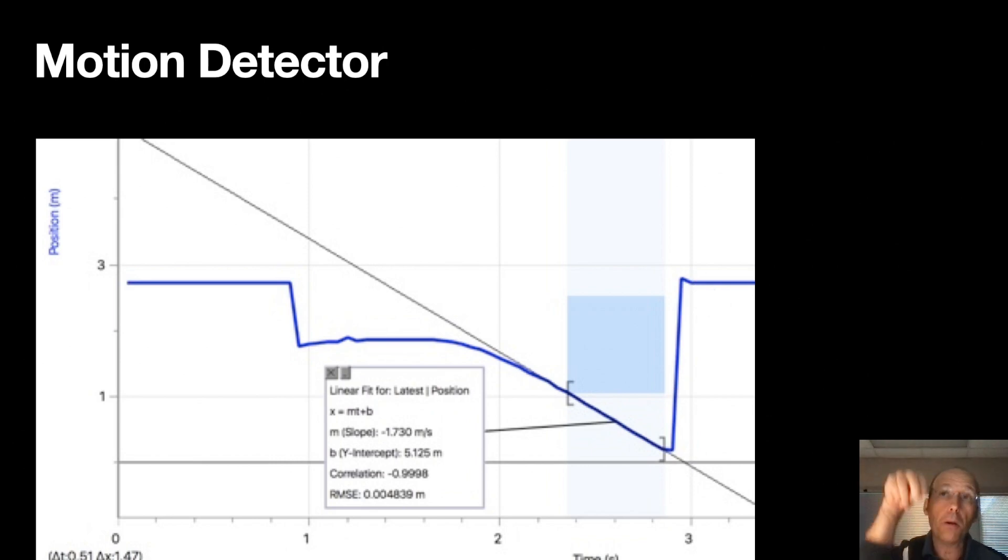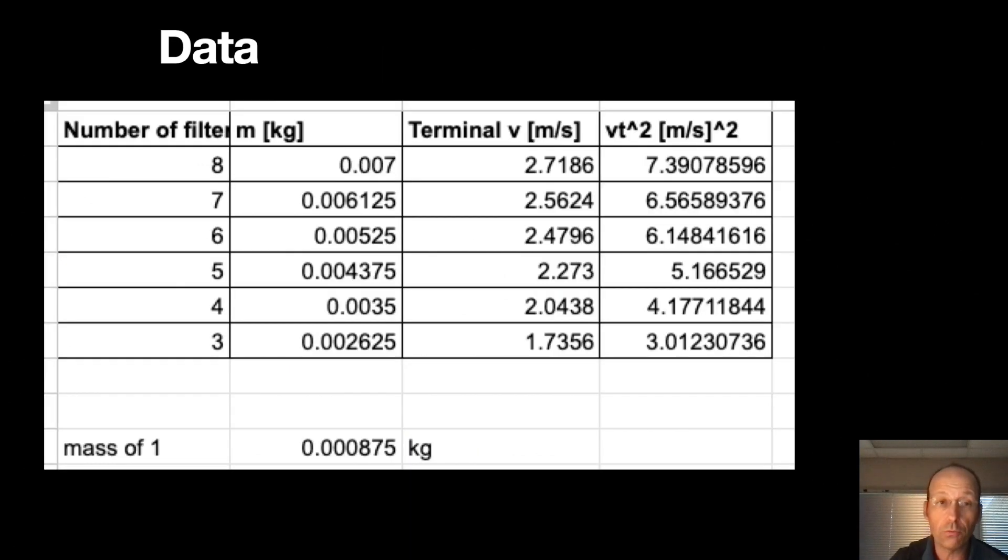Okay. So we can do that for different masses of coffee filters and measure the terminal velocity. Here is what I get. This is my data. First of all, I have the mass of one coffee filter. I took eight coffee filters. I found the mass. And then I divided by eight to get the mass of one. I dropped eight coffee filters. I got a terminal velocity and then I squared that terminal velocity. And then I did seven. And then I got the mass, velocity, terminal velocity, squared it, and so forth. And I get all this data.